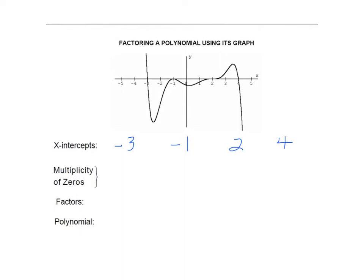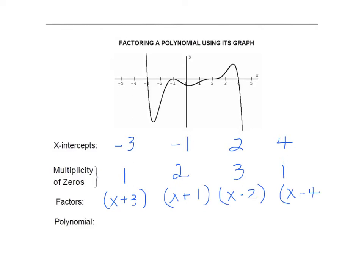Looking at multiplicity: at negative three it's a cross, so multiplicity of one. At negative one the graph doesn't cross — it's a bounce, so multiplicity of two. At two it's a wiggle, so multiplicity of three. And at four it's another cross, so multiplicity of one. The factors are: x plus three, x plus one, x minus two, and x minus four.